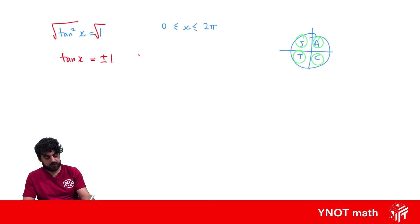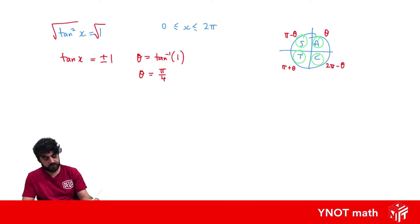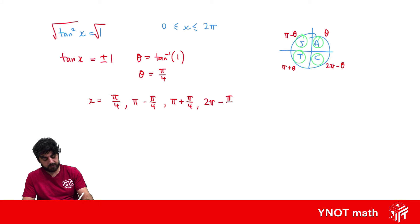Next we get our base angle theta, which is just the inverse tan of 1, giving us a base angle of π/4. So the answers are: the base angle itself in the first quadrant, π minus the base angle in the second, π plus the base angle in the third, and 2π minus the base angle in the fourth. Substituting π/4 as the base angle gives us π/4, 3π/4, 5π/4, and 7π/4.